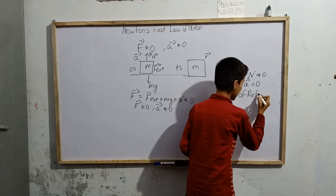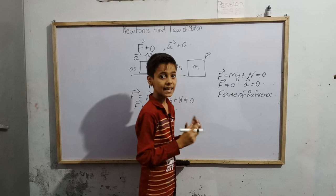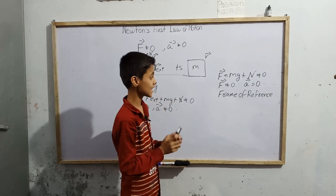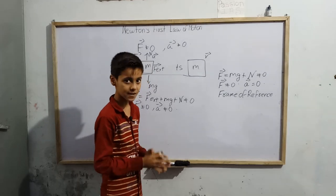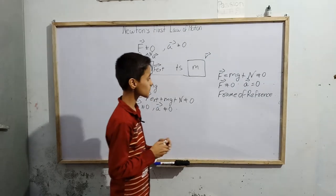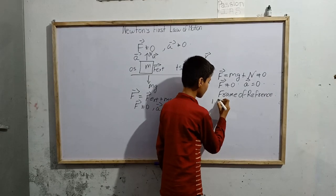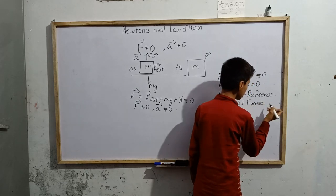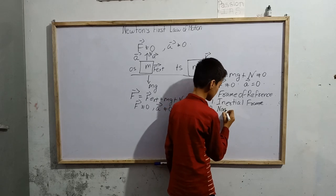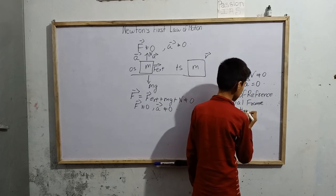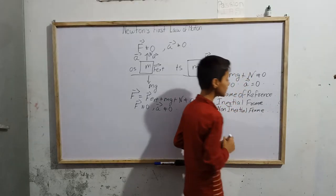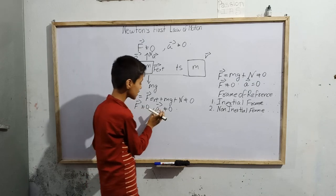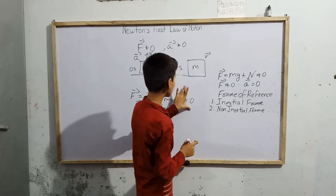What is a frame of reference? It is that proposition or standpoint through which we observe any particle and justify its rest or motion position. Our frame of reference in these examples was the ground. There are two kinds of frame of reference: inertial frame of reference and non-inertial frame of reference. An inertial frame of reference is one in which Newton's first law of motion is valid — like the block situation where F not equal to zero gave A not equal to zero.